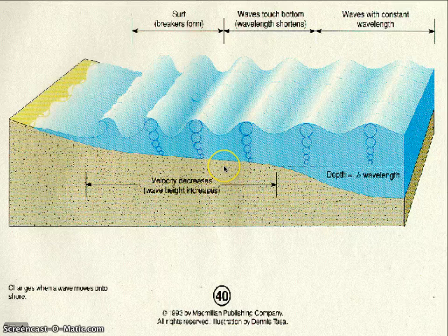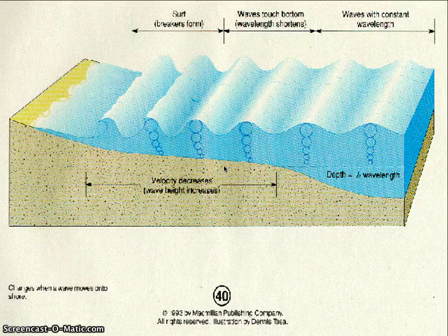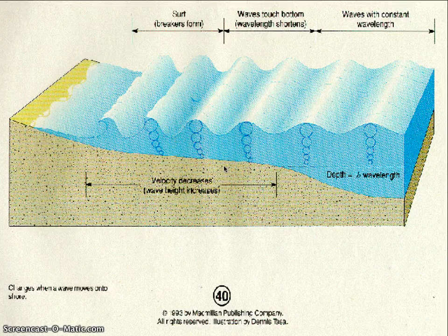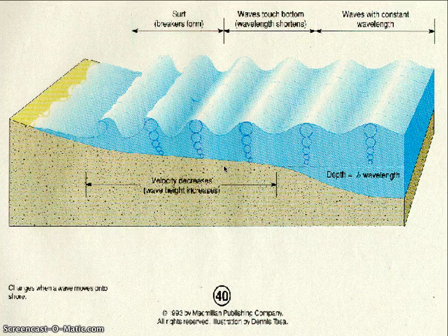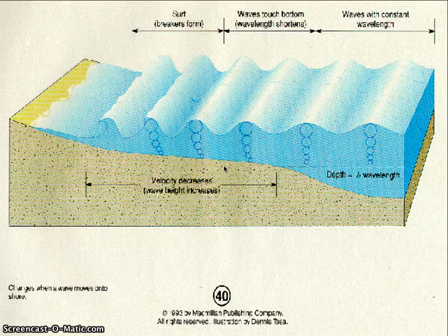This is very similar to what happens when you trip over something. When you trip, the bottom part of your body — your feet — gets caught on something and stops or slows down, while the top part of your body is still moving at the original speed. Your whole forward motion goes forward and you fall. The same thing happens with the wave.